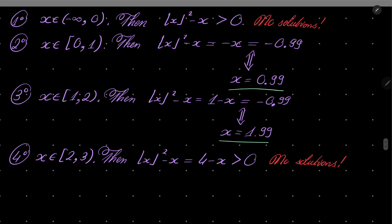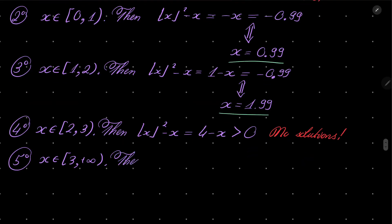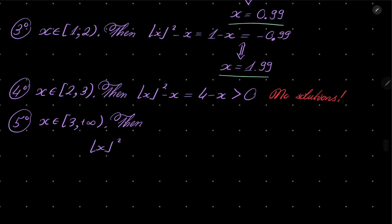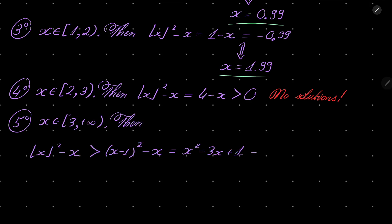Finally, one more case. Floor of x squared minus x — floor of x is a positive number which is strictly greater than x minus 1 — so it's greater than x minus 1 squared minus x. That equals x times x squared minus 3x plus 1, which can be written as x times x minus 3 plus 1, and since x is greater than or equal to 3, this number is for certain positive. So no solutions here as well.